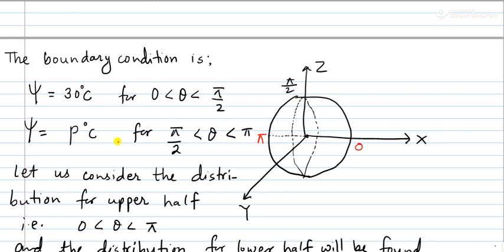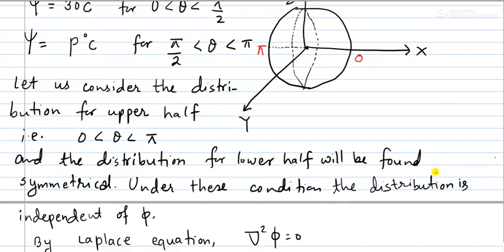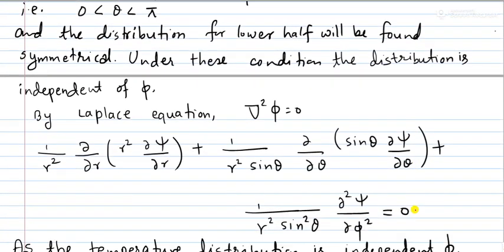There is a similar question in the B.S. Rajput textbook where both halves are at 0 degrees centigrade. But in this particular context, one half is at a constant temperature p degrees centigrade. That is why I have taken the constant temperature as p degrees centigrade. Now, after setting the boundary conditions, let us move ahead.